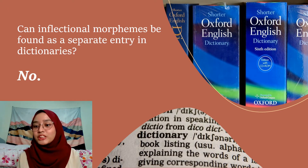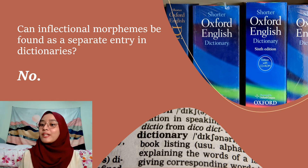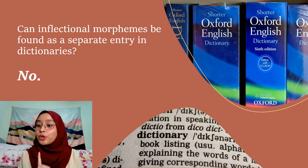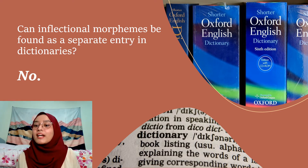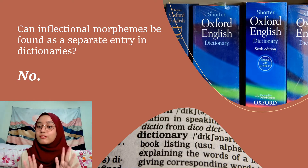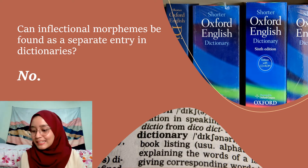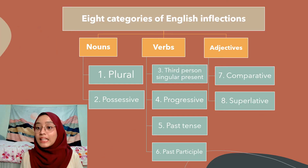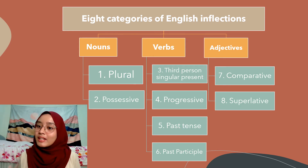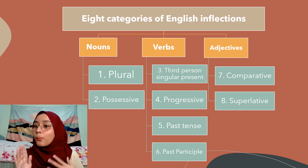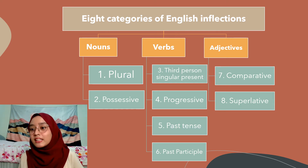Can words under inflectional morphology be found in separate entries in dictionaries? No, they cannot. Because inflections only modify a word so that it fits a grammatical context — they do not form a whole new word. Also, if you look in textbooks, you'll find that English is not a very inflectional language, unlike Arabic, Spanish, etc., because in English we only have eight inflectional affixes.